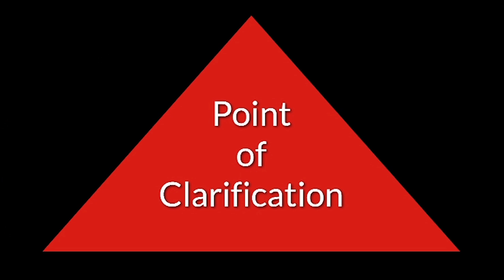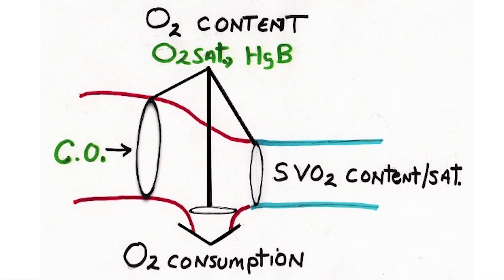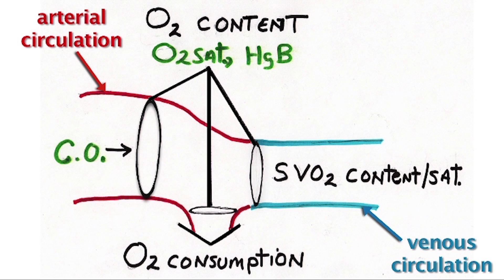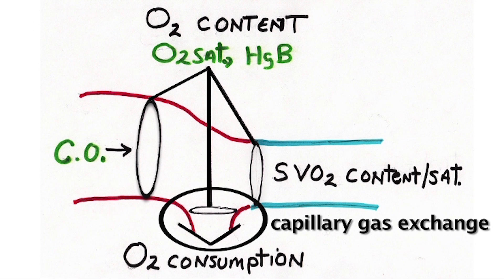Point of clarification: the explanation is actually pretty simple. This diagram shows in red lines the arterial side of the circulation on the left, and in blue lines the venous side of the circulation on the right. The arrow pointing downward represents gas exchange in the capillaries.